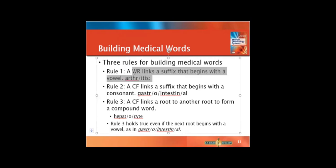Rule one, a word root, remember that's the bulk, that's the major part of the word without that vowel, links a suffix that begins with a vowel. Here's your example. If a suffix has a vowel, you do not use this combining form vowel. Since arthro has an R, the R can touch the I, they're fine. Remember, two consonants don't like to touch each other. So arthritis doesn't need that vowel.